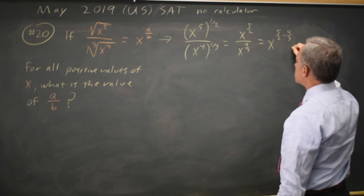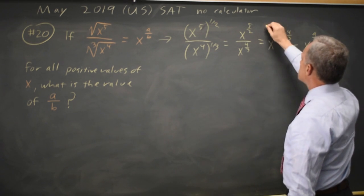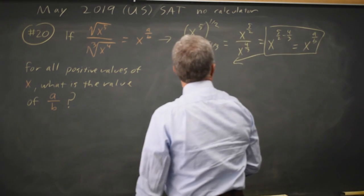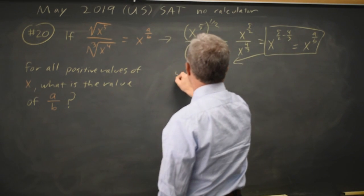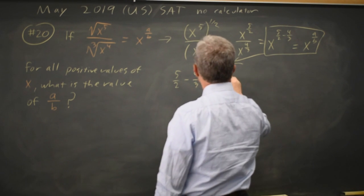And I want to write that exponent as a fraction in the form of x to the a over b. Since these are powers of the same base and they're equal, the exponents have to be equal. 5 halves minus 4 thirds equals a over b.